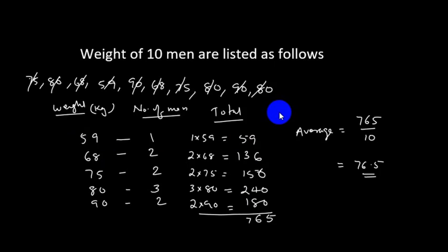When a large number of data items exist, finding the average in this direct way is not practical. For example, if there are 60 students in a class and we are asked to find the average mark obtained in an exam, we would need to add all 60 marks and then divide by 60. This would be very time-consuming and impractical — it is not always possible to do it that way.